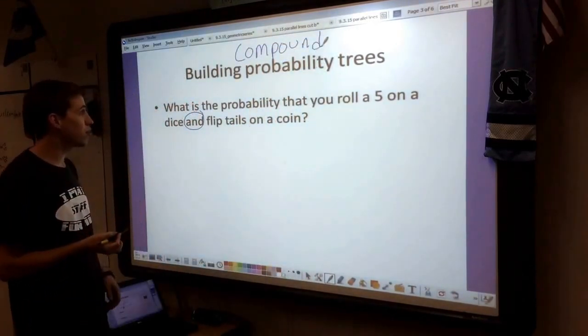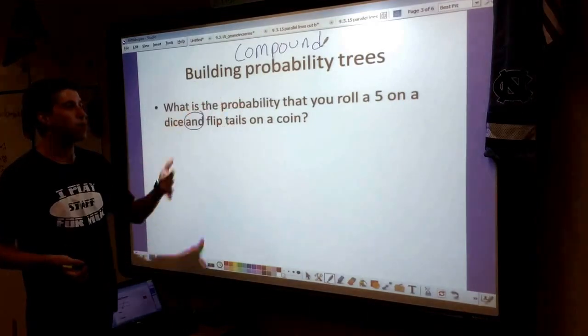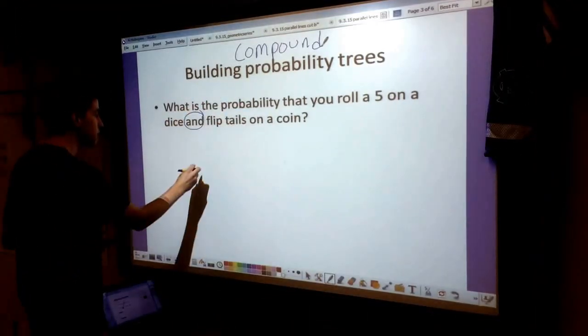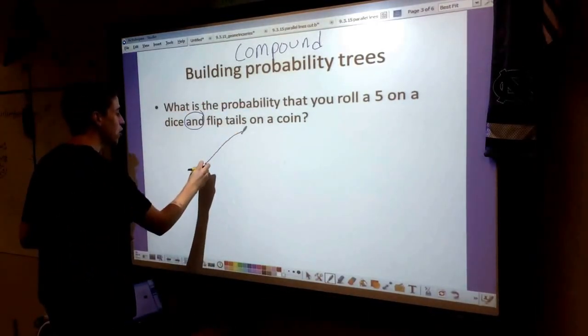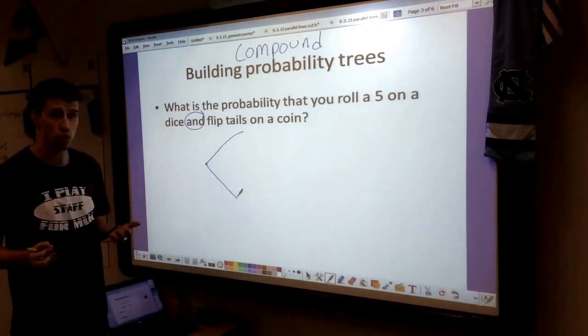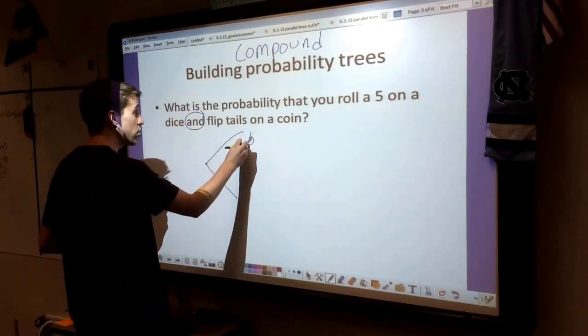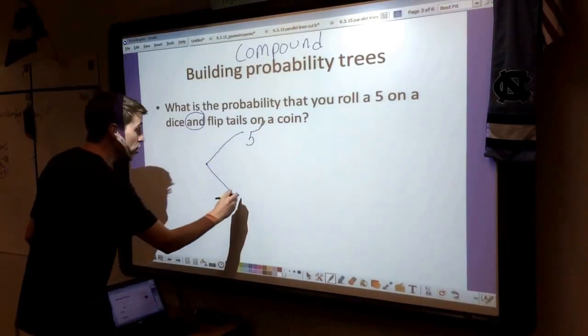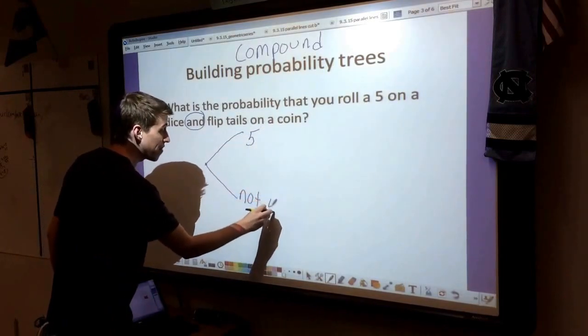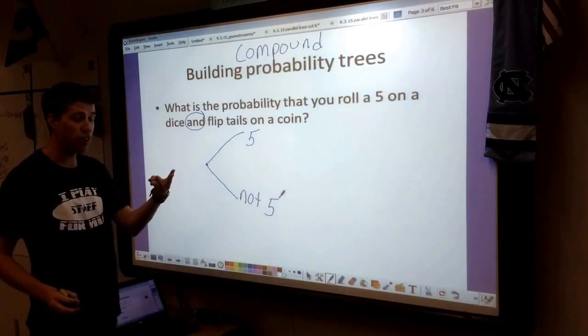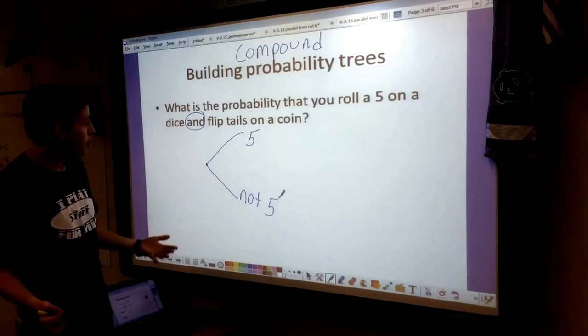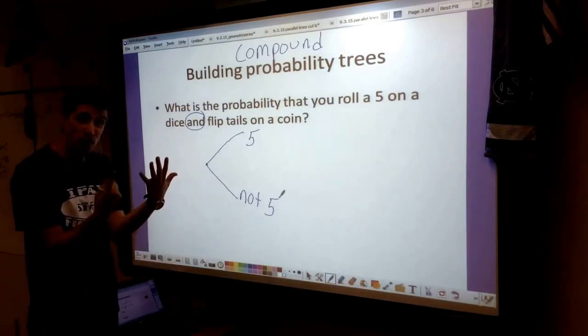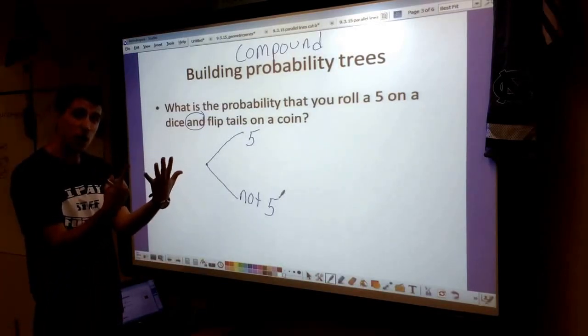So let's model the first thing. What is the probability you roll a 5 on a dice? You have two options when you roll your dice. You will either roll that 5 or you will roll not a 5. You might get a 1, 2, 3, 4, or 6. I just counted all the different options you can get. There are six different options on a dice.